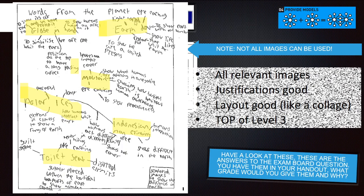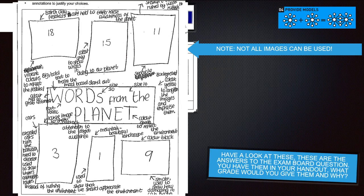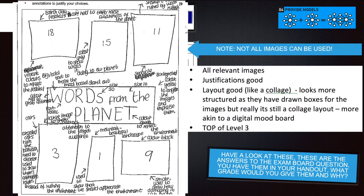Let's have a look at another one. Look how they have numbered — these numbers correspond to the images, because remember all the images on the grid are labelled. It's got its justifications there. Level one, level two, level three? Level three — this would again be top of level three. All the images are relevant, the justifications are good, the layout's good like a collage. It looks more structured as boxes have been drawn for the images, more akin to a digital mood board.